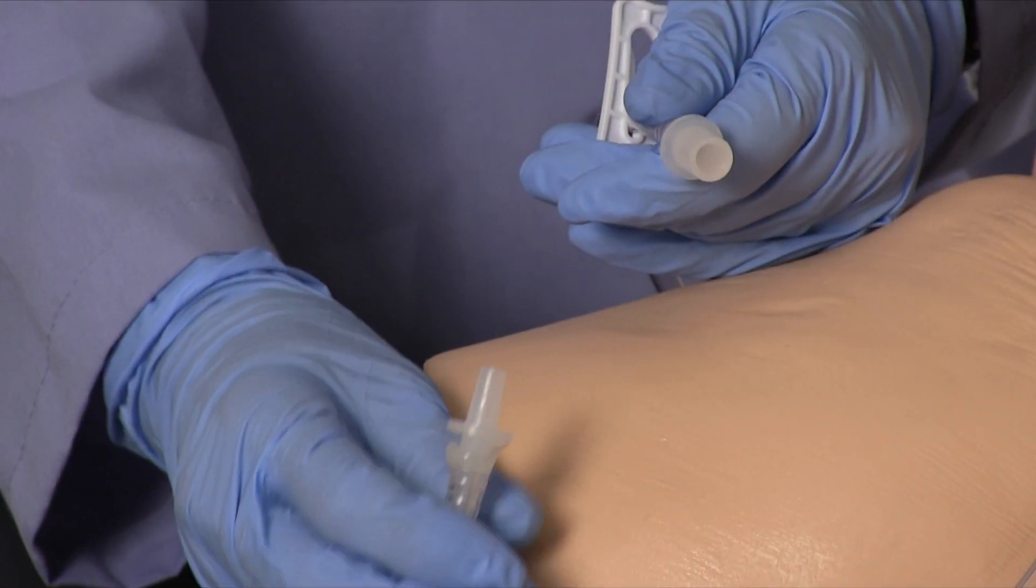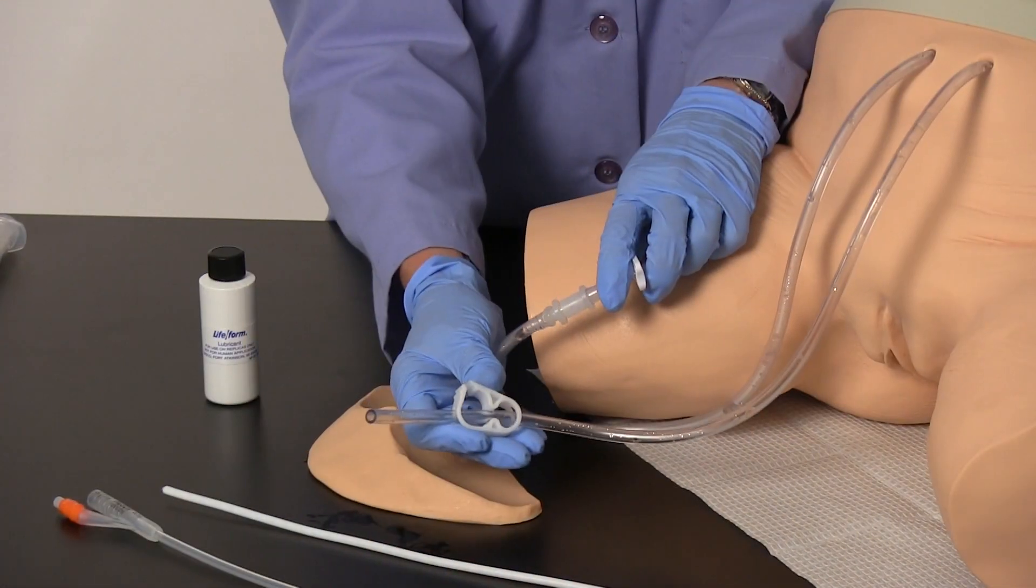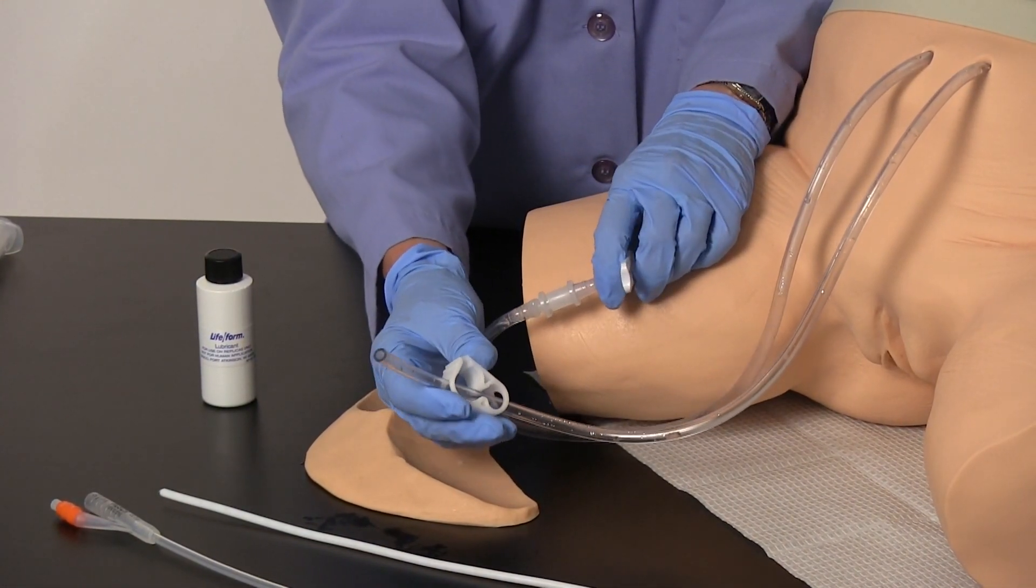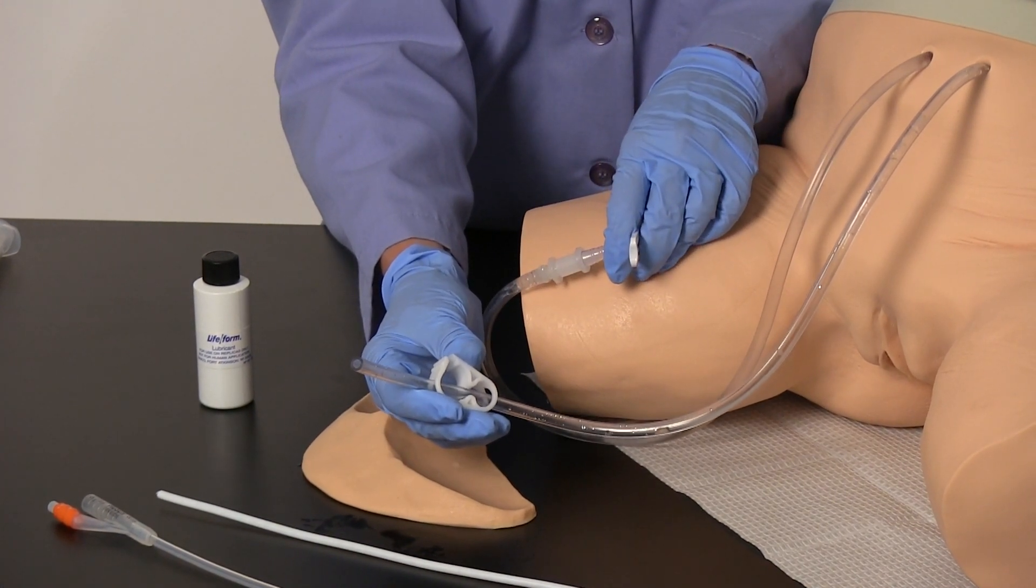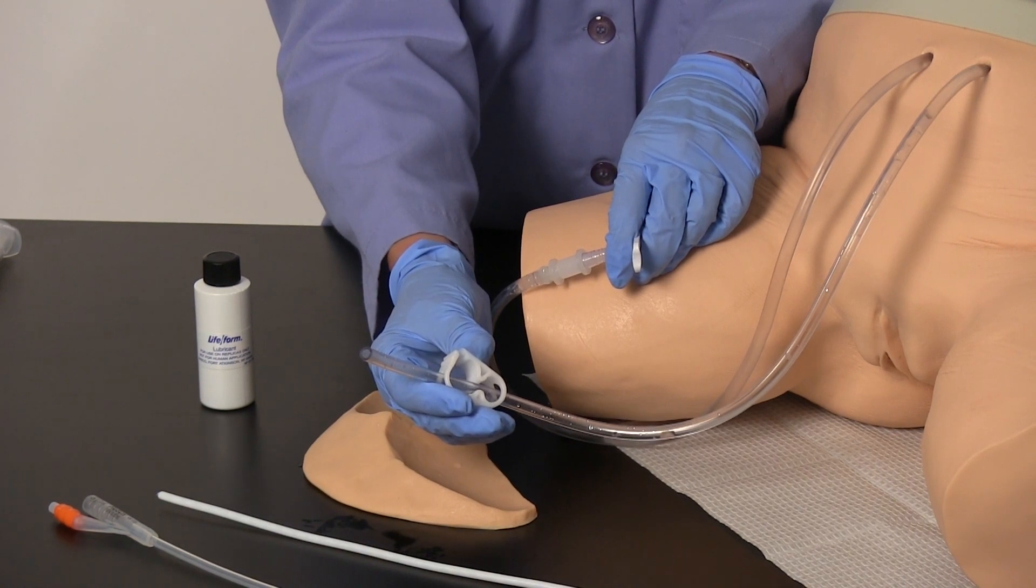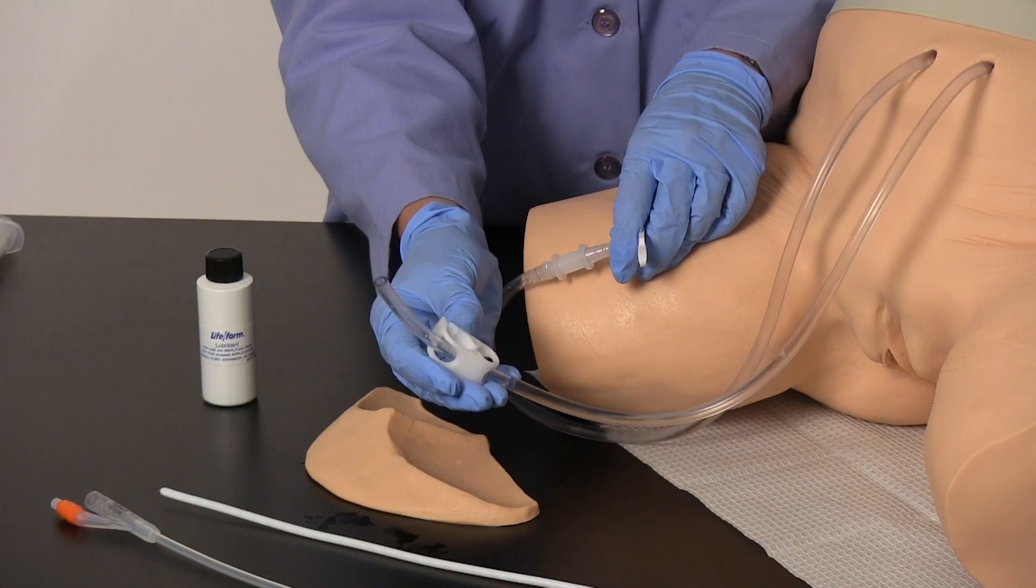Using the quick disconnect fitting, connect the fluid administration set to the simulator. To fill the simulated bladder inside, open both the slide clamp and the pinch clamp allowing water to flow through, charging the system, and then close the pinch clamp on the drain tube. Your simulator is now ready to perform catheterization procedures.